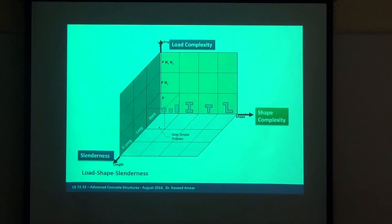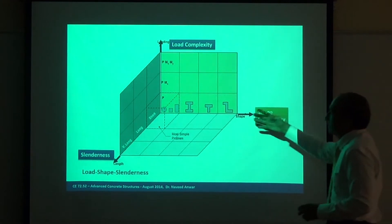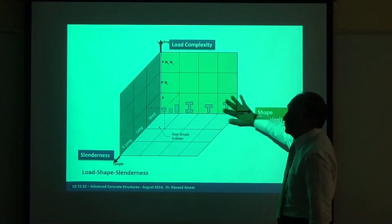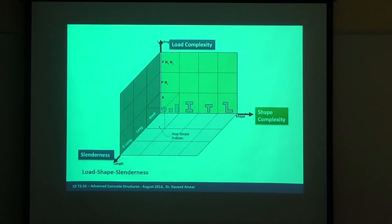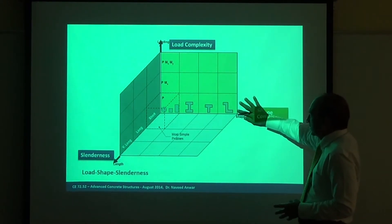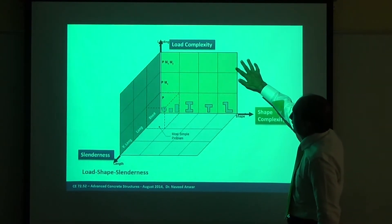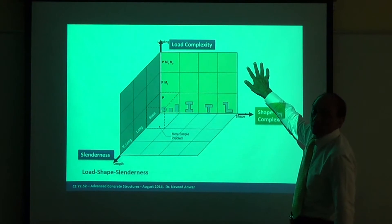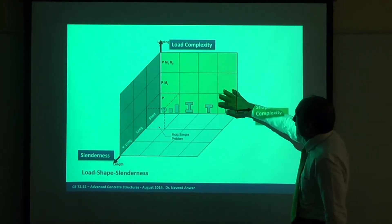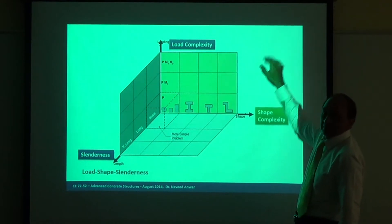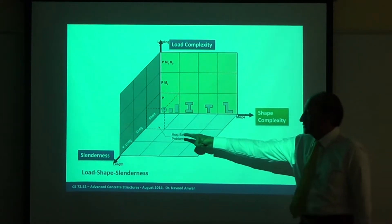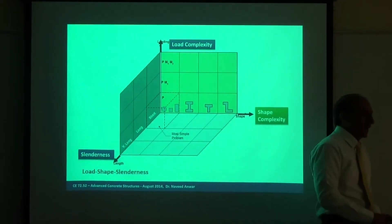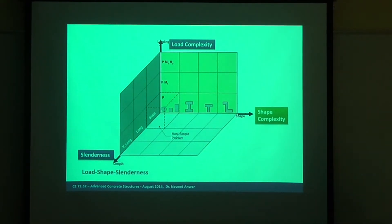We want to study them all — the effect of slenderness, the effect of cross-section shape. Cross-section complexity we have already solved. We have a general equation and a program, Section Builder, that can analyze any cross-section shape. So you are not worried about section shape or loading type, because that program can solve P, M_x, and M_y. By itself, bending is solved for any cross section, so this plane is covered.